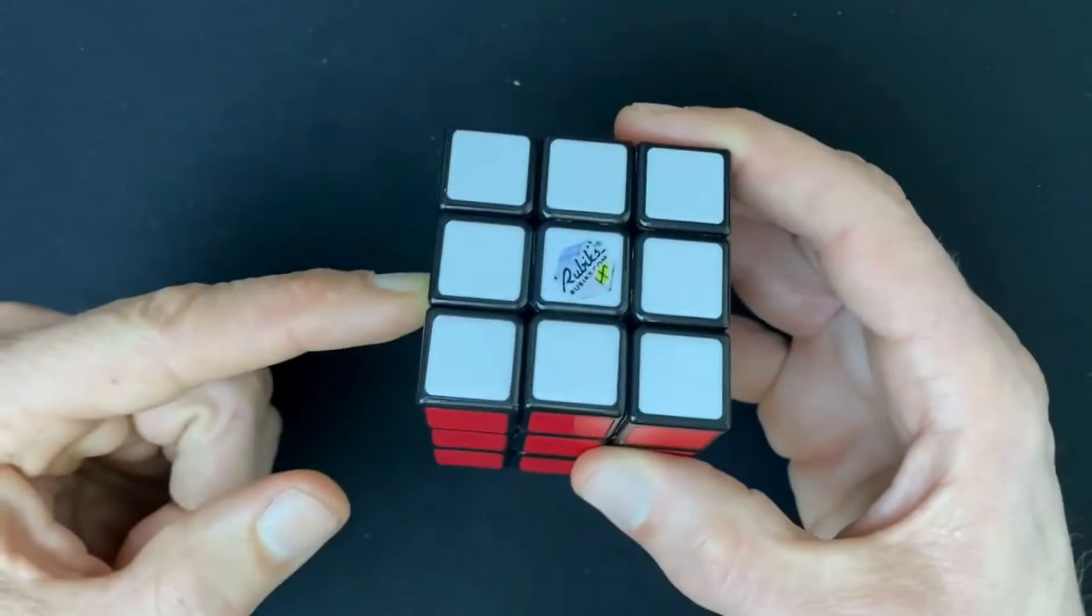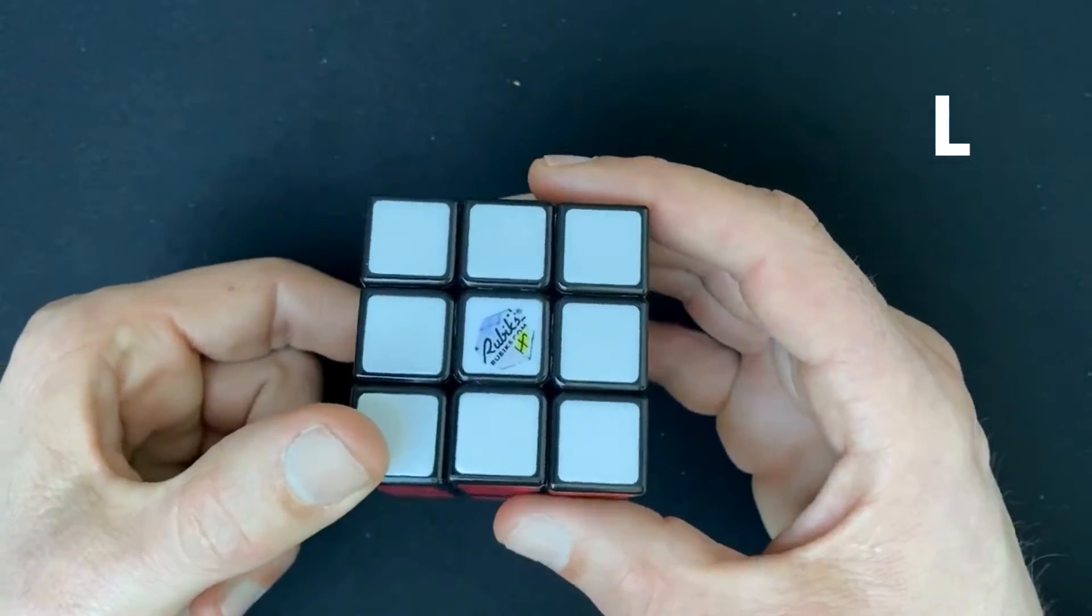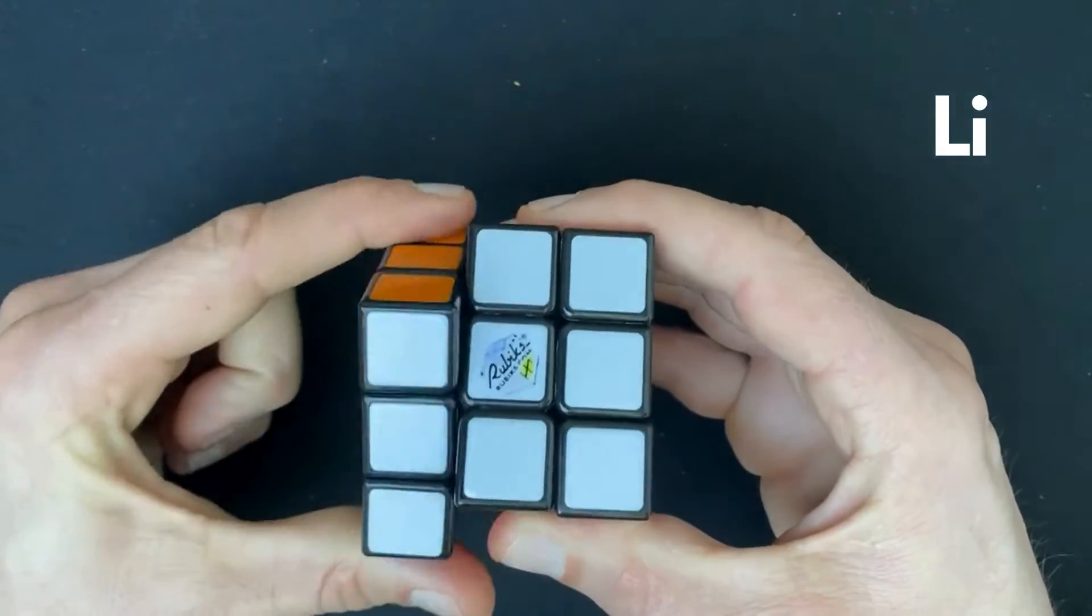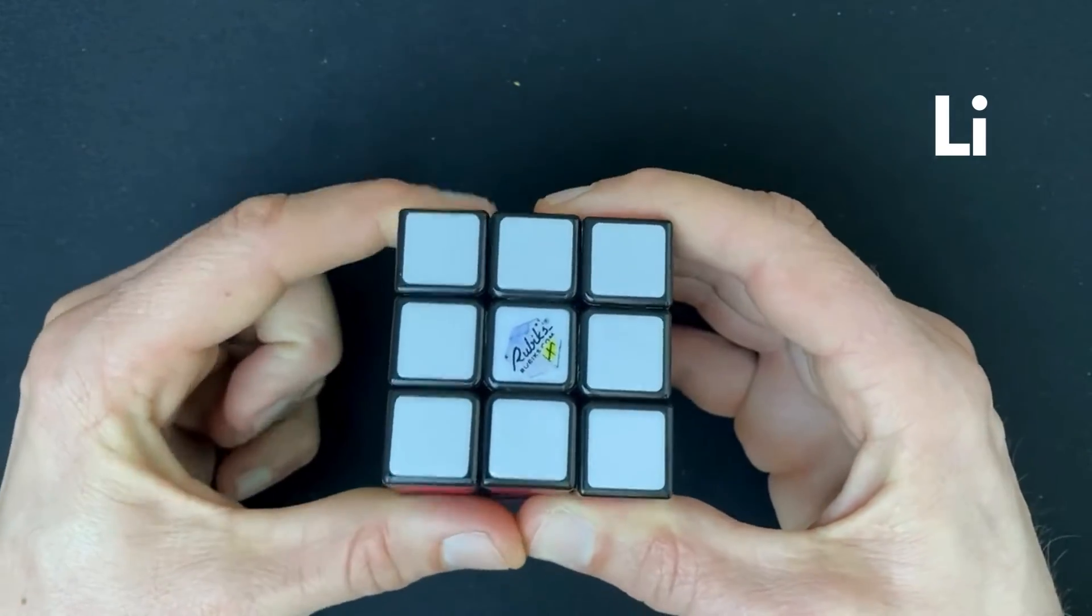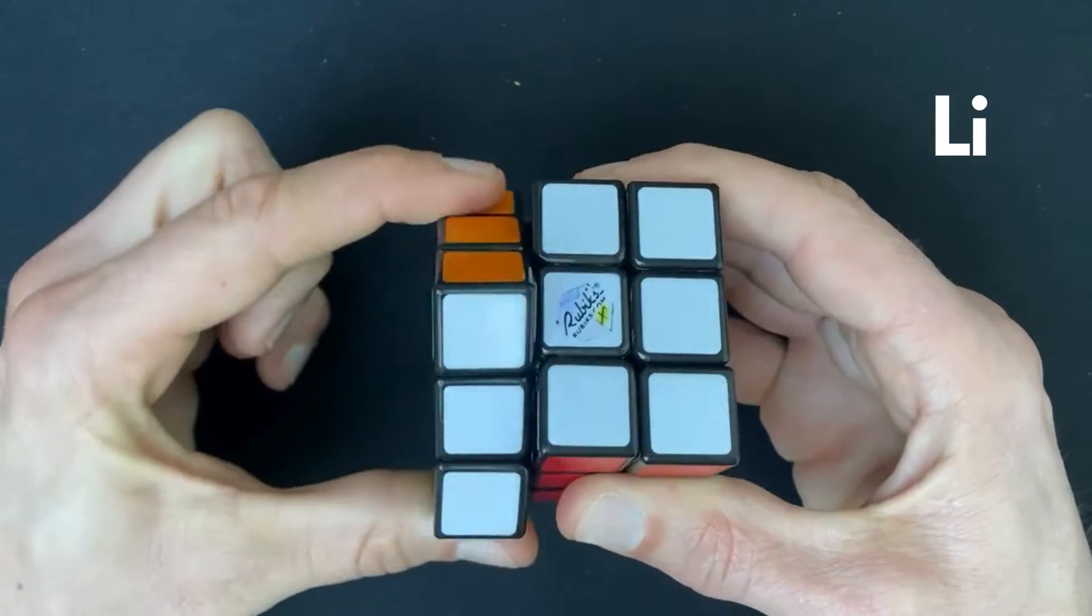The left layer also clockwise. This is L, and the left layer counterclockwise. So L and counterclockwise.